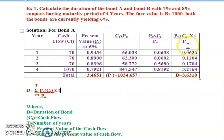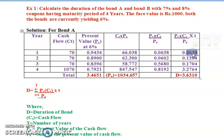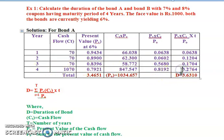For the final column, we multiply each PV times CT divided by P-naught value by its respective year. Year one: 0.0638 times 1 equals 0.0638. Year two: 0.0602 times 2 equals 0.1204. Year three: 0.0568 times 3 equals 0.1704. Year four: 0.8192 times 4 equals 3.2764. Adding all gives the duration of Bond A as 3.6310 years.